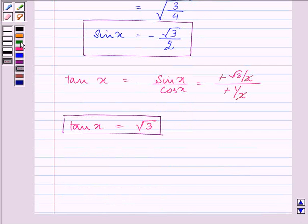Now we can easily find out the value of cosec x, that will be 1 by sin x, and hence it will be equal to minus 2 by root 3.